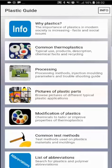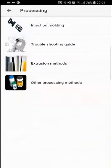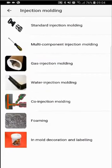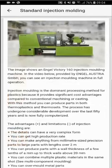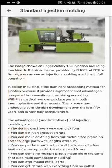Let's look at the processing part of the app. Here you will find these subtitles. Let's tap on injection molding. Here you will find seven different molding methods. Now let's go to standard injection molding.